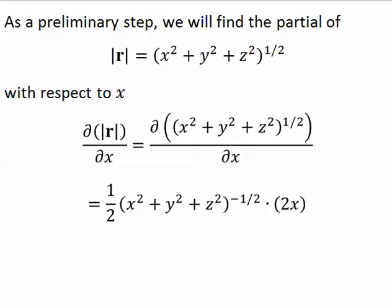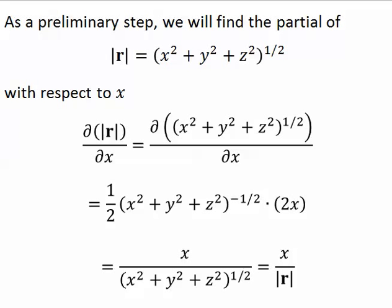So we're going to use the chain rule. So it brings down the one-half and it's to the negative one-half power, and then the derivative of what's inside. And now for some clean-up. The twos cancel, and I can write it this way, or better yet, write it as x over the magnitude of r.